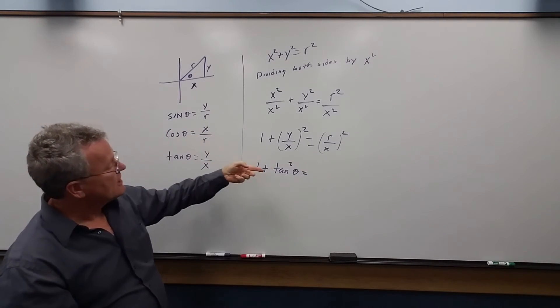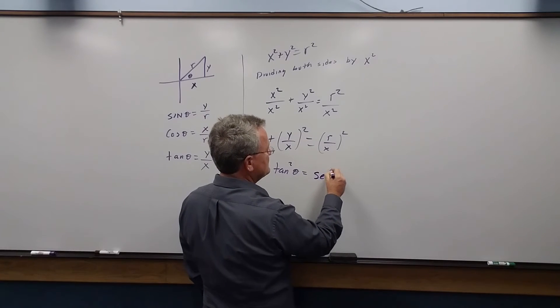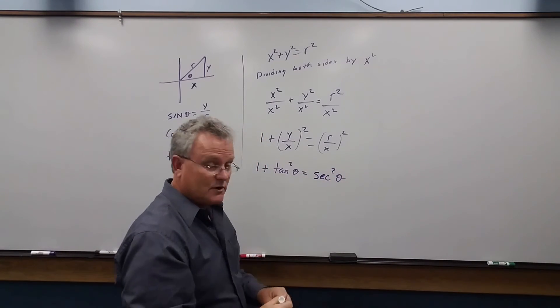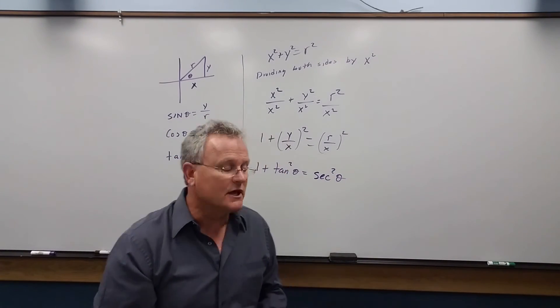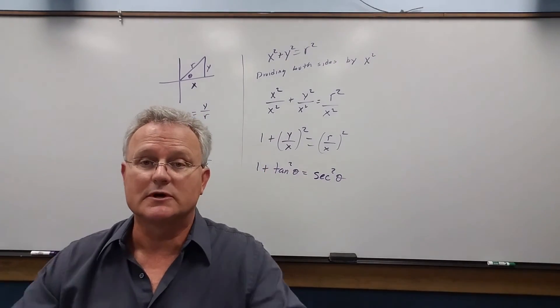So r over x is secant, and this is equal to secant squared. So that's where the Pythagorean relation of 1 plus tangent squared equals secant squared comes from.